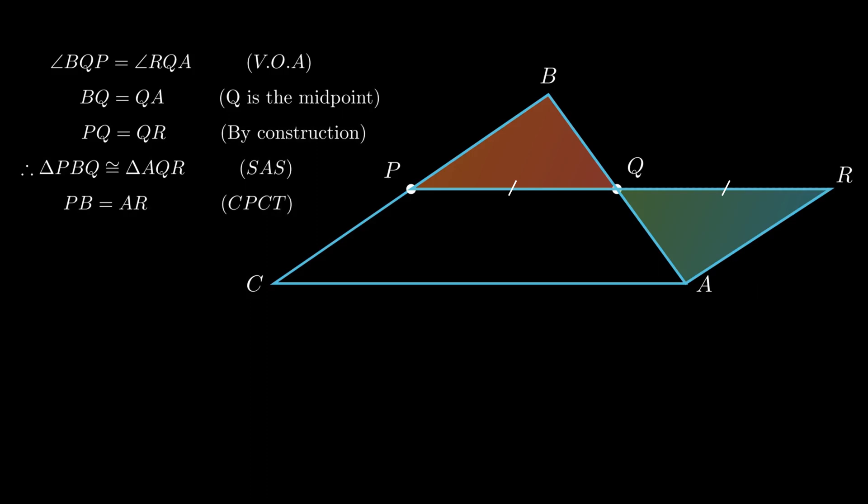By corresponding parts of congruent triangles, we conclude segment PB is equal to segment AR. Since segment PB is equal to segment PC as P is the midpoint of side BC, by using above equation, we conclude segment PC is equal to segment AR.